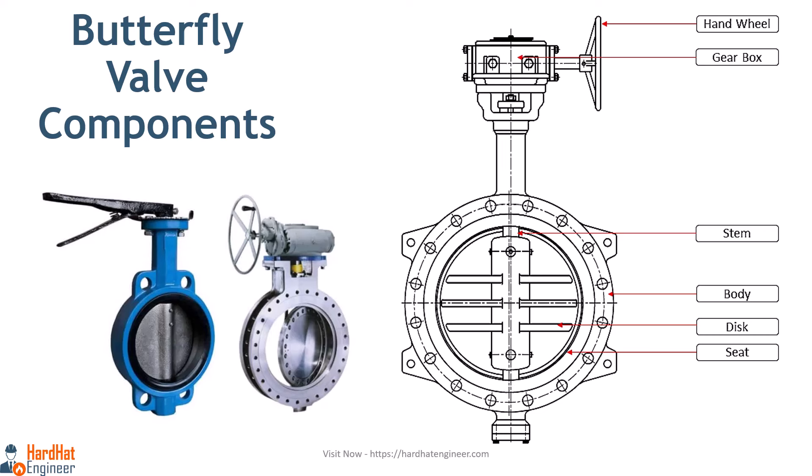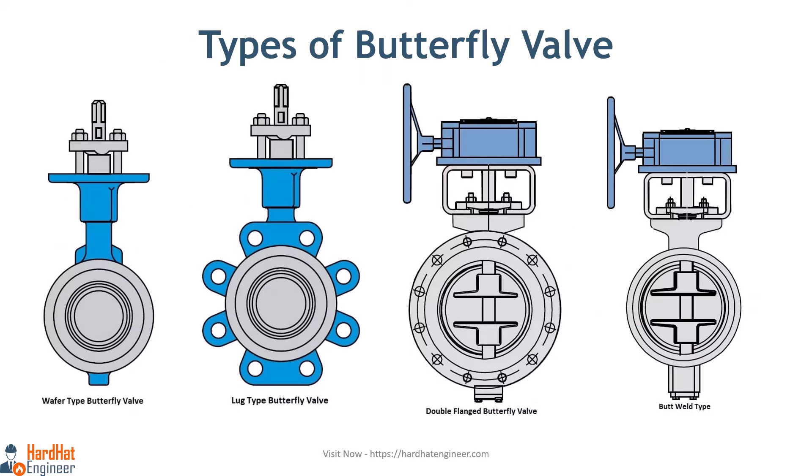A butterfly valve is used in many different fluid services and performs well in slurry applications. They can be used in liquids, steam, cryogenics, cooling water, air, gases, firefighting, and vacuum services. Butterfly valves are used in all types of industries, even in high pressure and temperature services where a high degree of shutoff is not required.